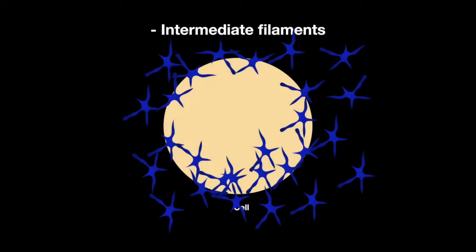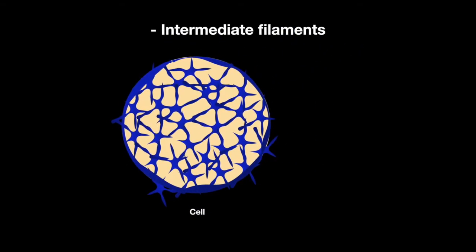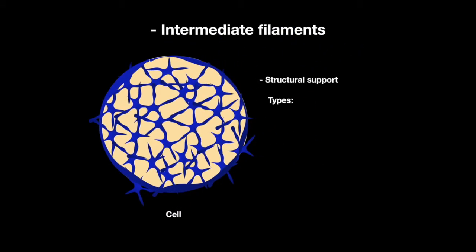Intermediate filaments function primarily to maintain the cell's structure. Examples of intermediate filaments are vimentin, desmin, cytokeratin, lamins, glial fibrillary acidic protein, or GFAP, and neurofilaments.